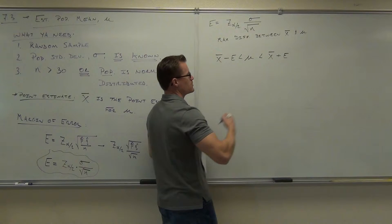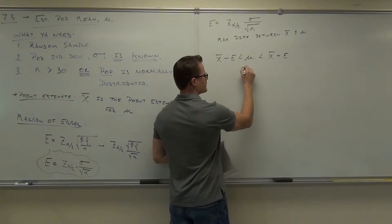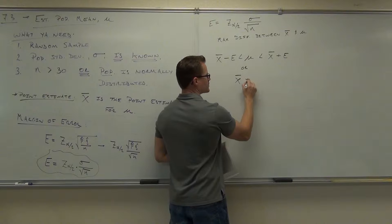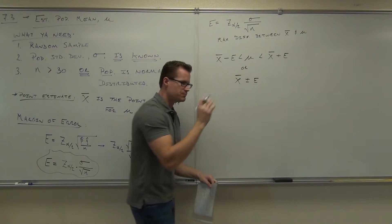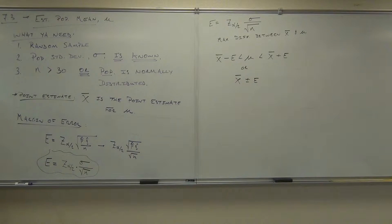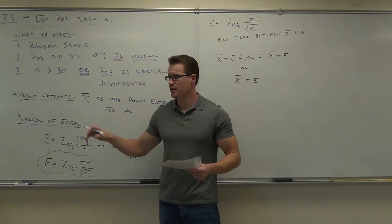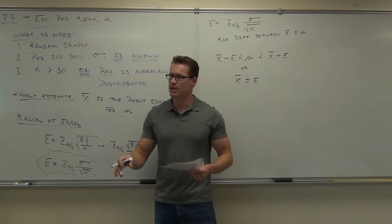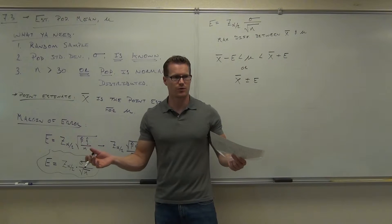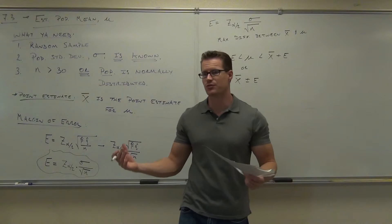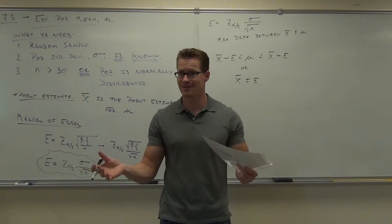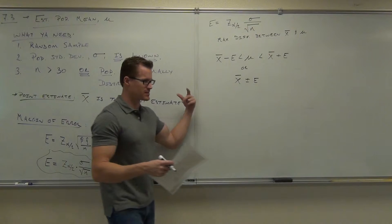Also, one last thing. Remember that you can represent this as x bar plus or minus E. That's another way that you could potentially see that. So let me give you the steps here. They're going to be very similar to the last steps I gave you for these proportions in the last section, but I'll give them to you again. We'll go through an example and then we'll find out how to find the required sample size like we did last time for a certain margin of error. You guys ready for it? Has it made sense so far?